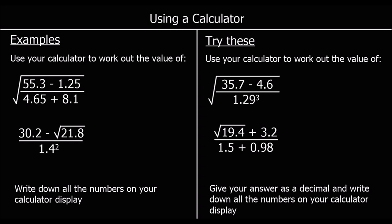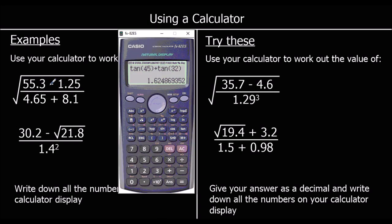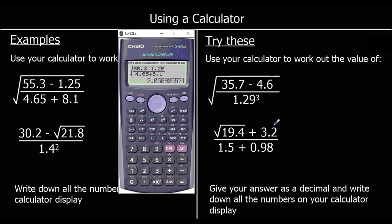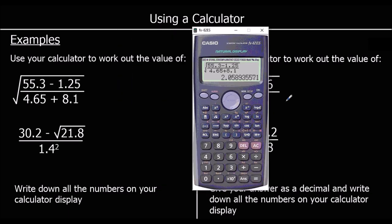Last examples: use your calculator to work out the value of these. They look complicated, but it's just a case of writing it in the calculator exactly how it looks. For the first one, it's all in the square root, so press the square root first, then the fraction button. On the top line we want 55.3 take away 1.25, then click down to the bottom line where we've got 4.65 plus 8.1. Write down all the numbers: 2.058935571.